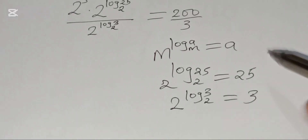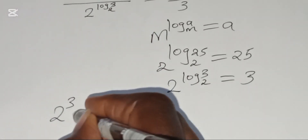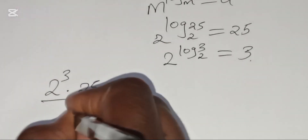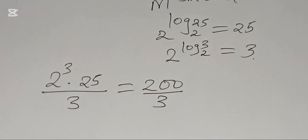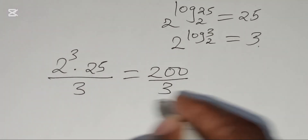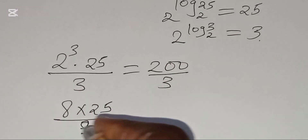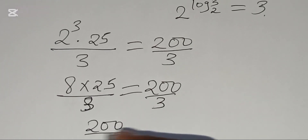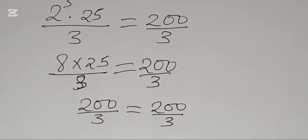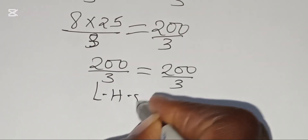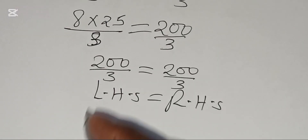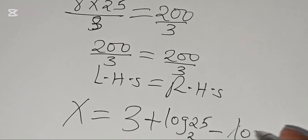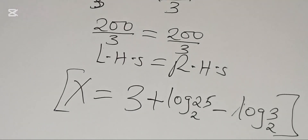Substituting, we have 2^3 × 25 / 3 = 8 × 25 / 3 = 200/3. This equals 200/3, confirming the left-hand side equals the right-hand side. Therefore, x = 3 + log₂(25) − log₂(3) satisfies the equation.